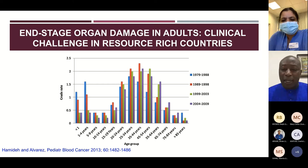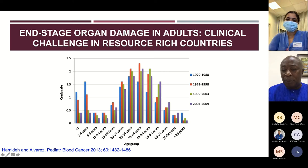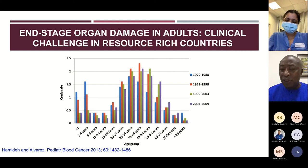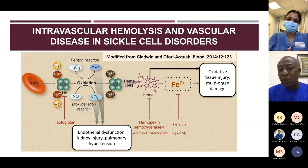Newborn screening is not a problem in England. In the United States over the last 30 years, from 1979 to 2009, crude mortality in children has dropped significantly because prophylaxis with penicillin can stop kids from having infection. But if you look at older patients — the adults — it really hasn't changed. That's because we still don't have an answer to the inevitable end organ damage that sickle cell patients are at risk of developing.